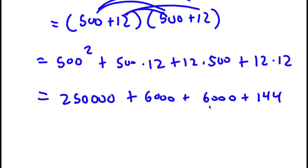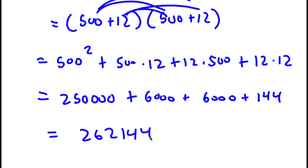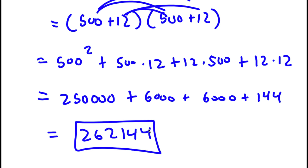Now 6,000 plus 6,000 is 12,000, and 12,000 plus 250,000 is 262,000. So I have 262,000 and adding 144 at the end gives 262,144. So this is my answer.